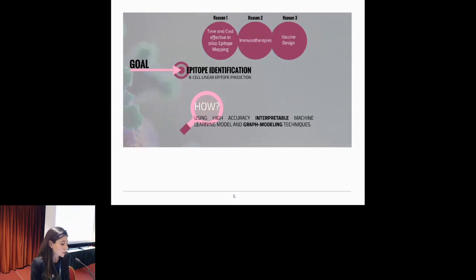And I could cite some applications of it, but the two major ones are immunotherapies, epitope-based immunotherapies for autoimmune disease and cancer disease, like personalized cancer vaccines that use epitope-based as a fundamental topic, and also vaccine design. And we are aiming to help this field using a high-accuracy interpretable machine learning approach to give us biological insights, and also graph modeling techniques to represent these residues and distinguish between which residues are part of the epitope and which aren't.